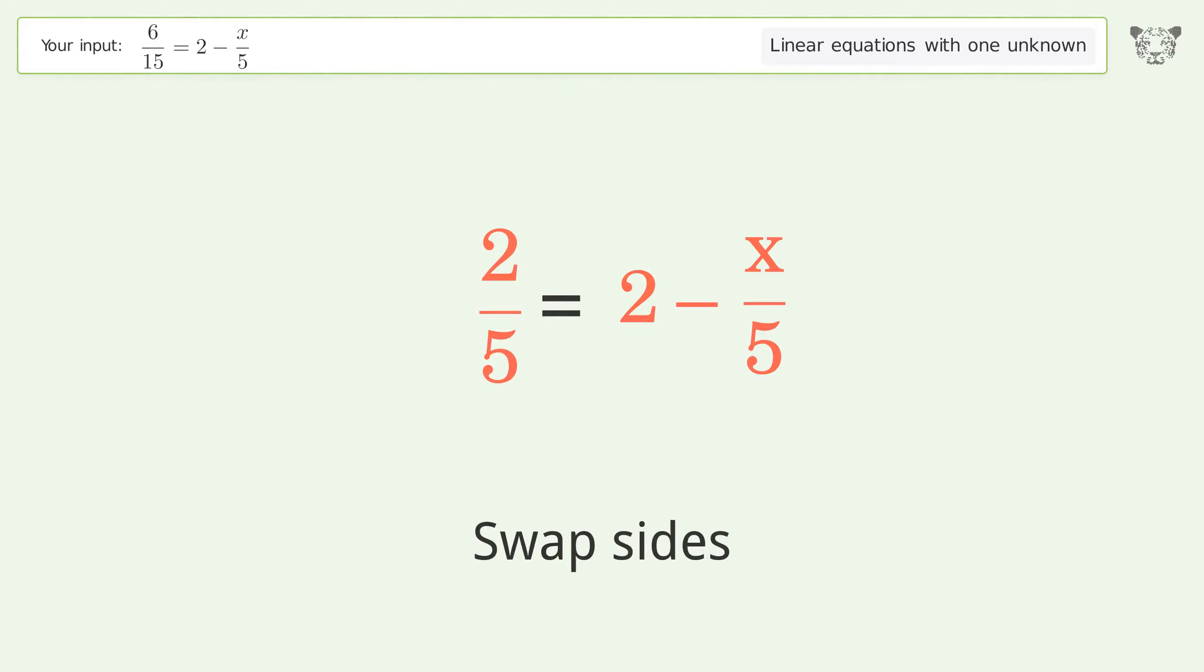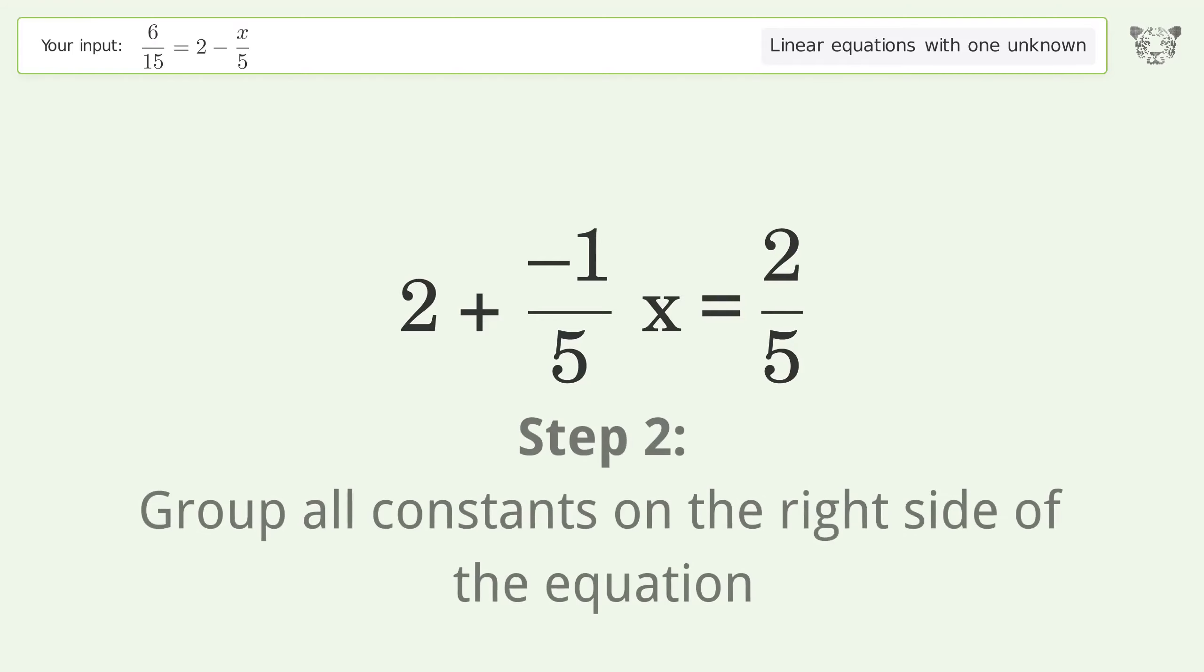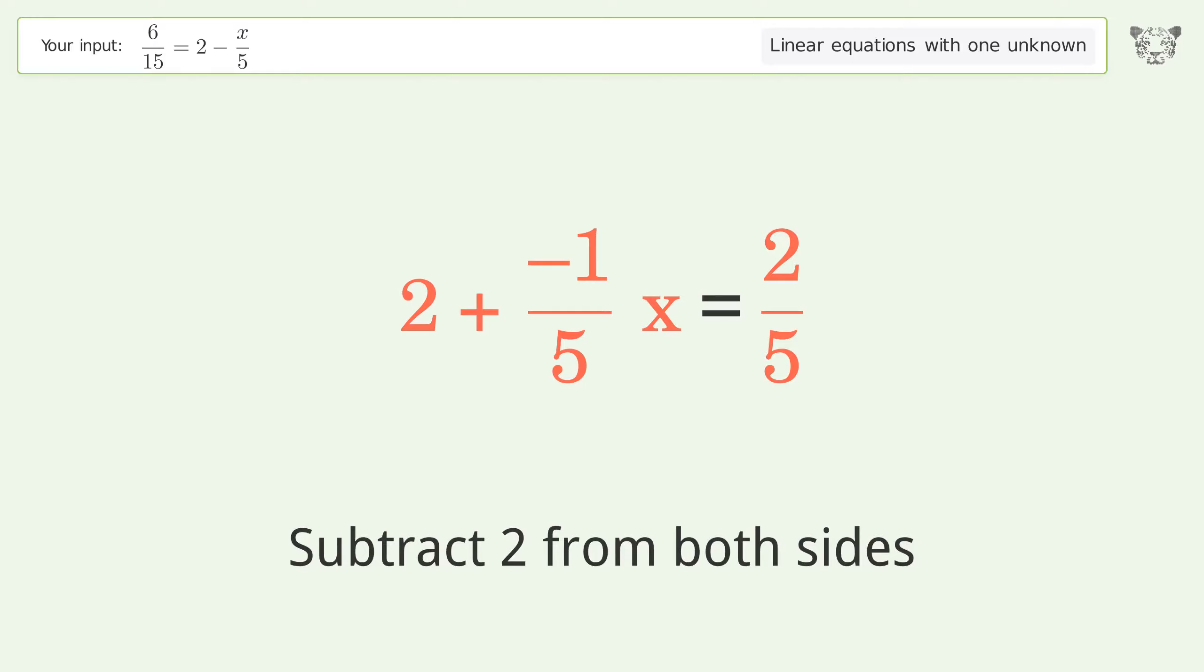Swap sides. Group all constants on the right side of the equation. Subtract 2 from both sides.